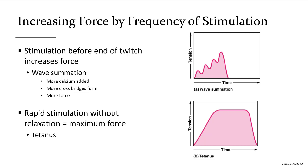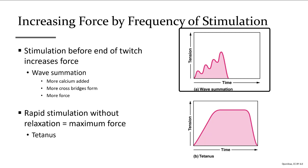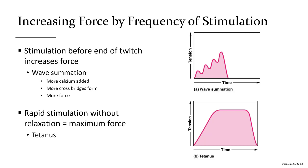When we want to increase the force of contraction, we can recruit more motor units, but for a single motor unit we can also rapidly stimulate a muscle. If you stimulate a muscle before it fully relaxes, you can make the next twitch bigger than the first because you are compounding and building on the calcium already released. Before all the calcium gets brought back in, a second rapid stimulus allows extra calcium to be put onto troponin.